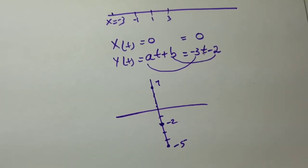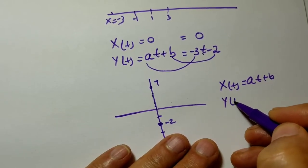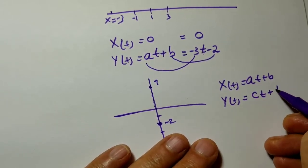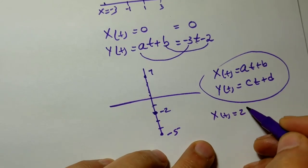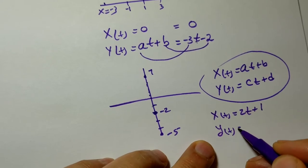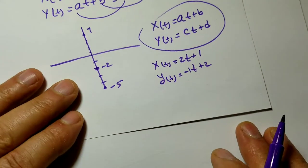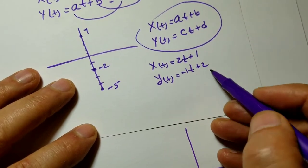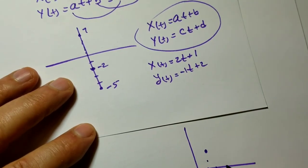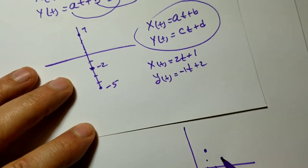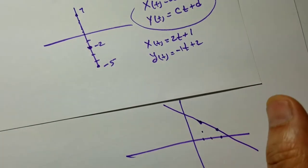What is a slant path? Both x of t equals at plus b and y of t equals ct plus d are linear functions. For example, x of t equals 2t plus 1 and y of t equals negative t plus 2. When t is 0, you are at (1, 2). When t is 1, you are at (3, 1). Therefore, you get a slant path.